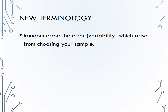Random errors show up in random samples because each sample will be different. We can quantify random error, and we will do that in later sections. Random errors are deliberate and due to the randomness in selecting a sample. These are not mistakes.